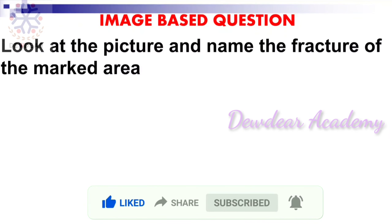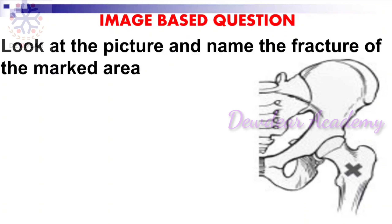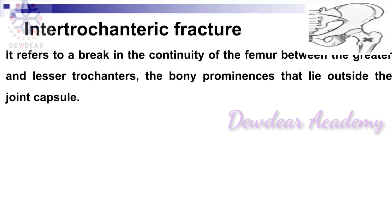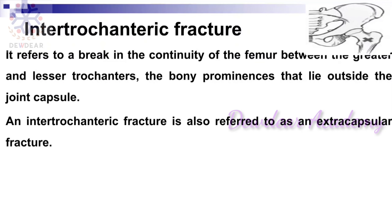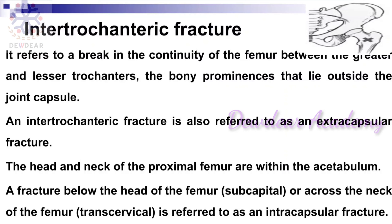Next question: look at the picture and name the fracture of the marked area. The answer is intertrochanteric fracture. An intertrochanteric fracture refers to a break in the continuity of the femur between the greater and lesser trochanter — the bony prominences that lie outside the joint capsule. It is also referred to as an extracapsular fracture. Fractures below the head of the femur — subcapital or across the neck of the femur (transcervical) — are referred to as intracapsular fractures.